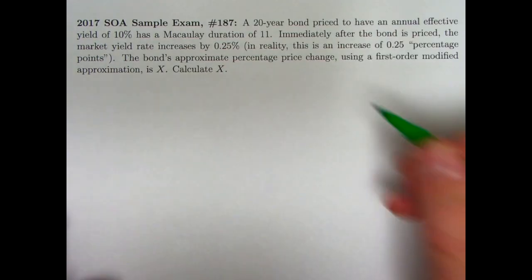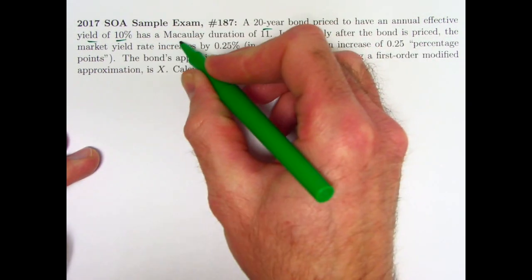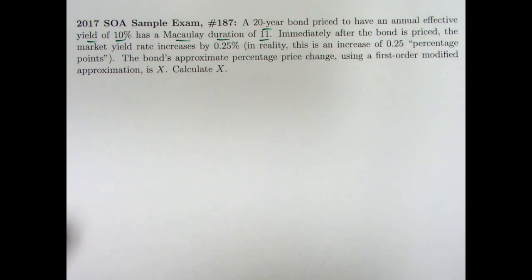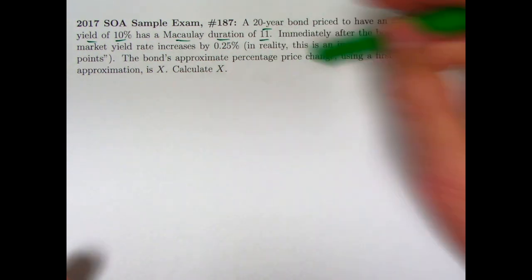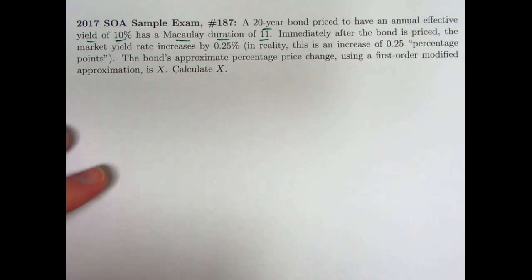So we have here a 20-year bond priced at an annual effective yield of 10%, and we're also given that the Macaulay duration is 11. We're going to need the modified duration, however. It's understood that that would be 11 years.